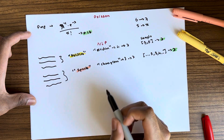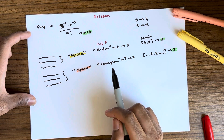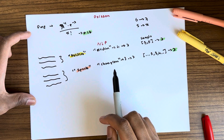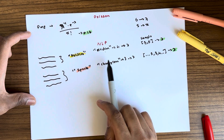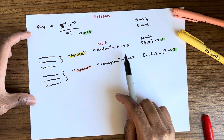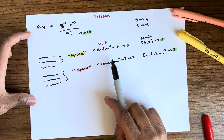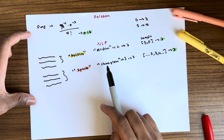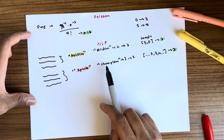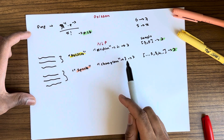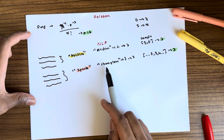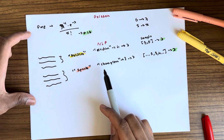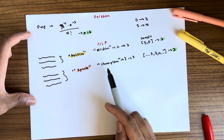One thing to mention is that the Poisson distribution for synthetic data alone might not be very useful, but what you can do is incorporate it with other methods so that you can get even more robust synthetically generated data.